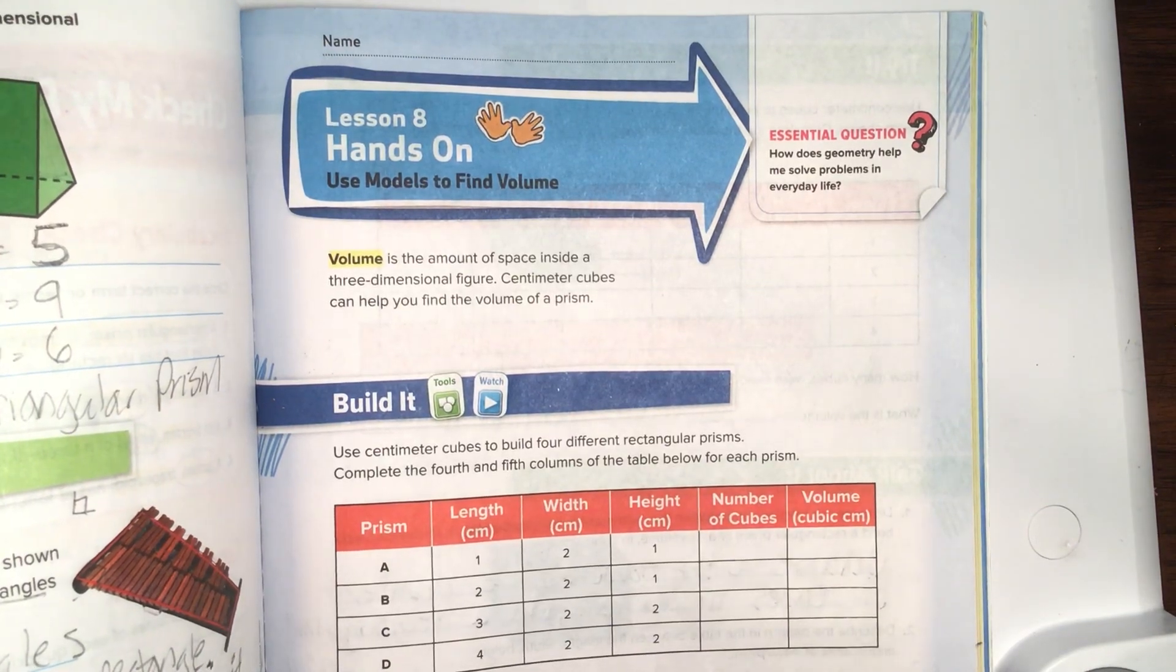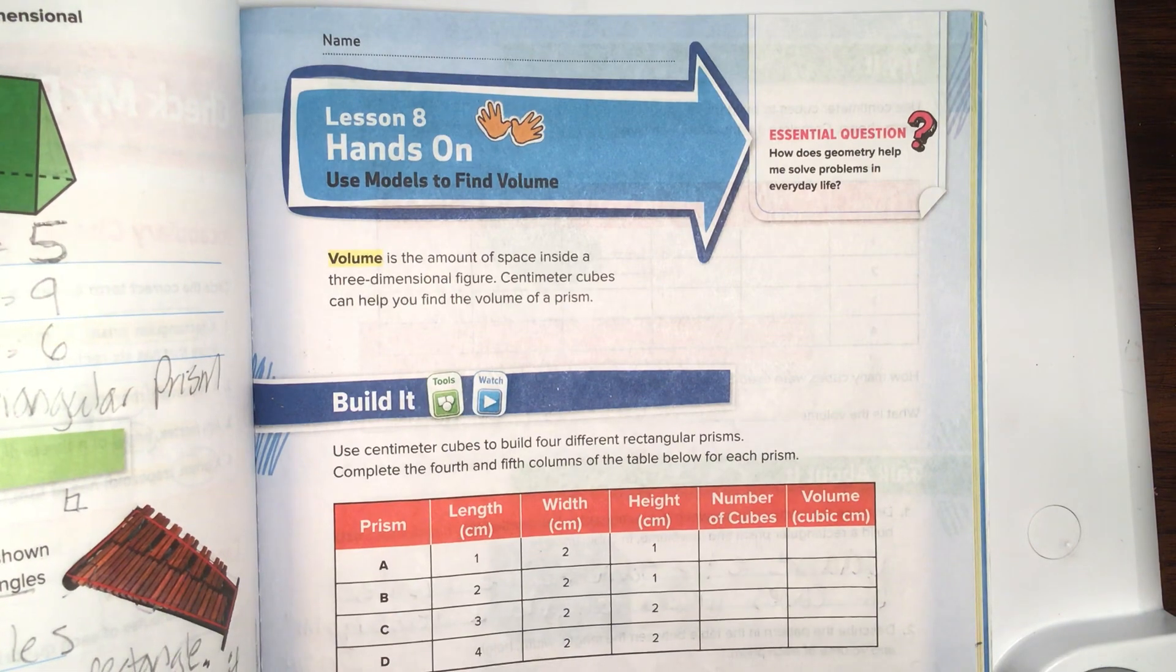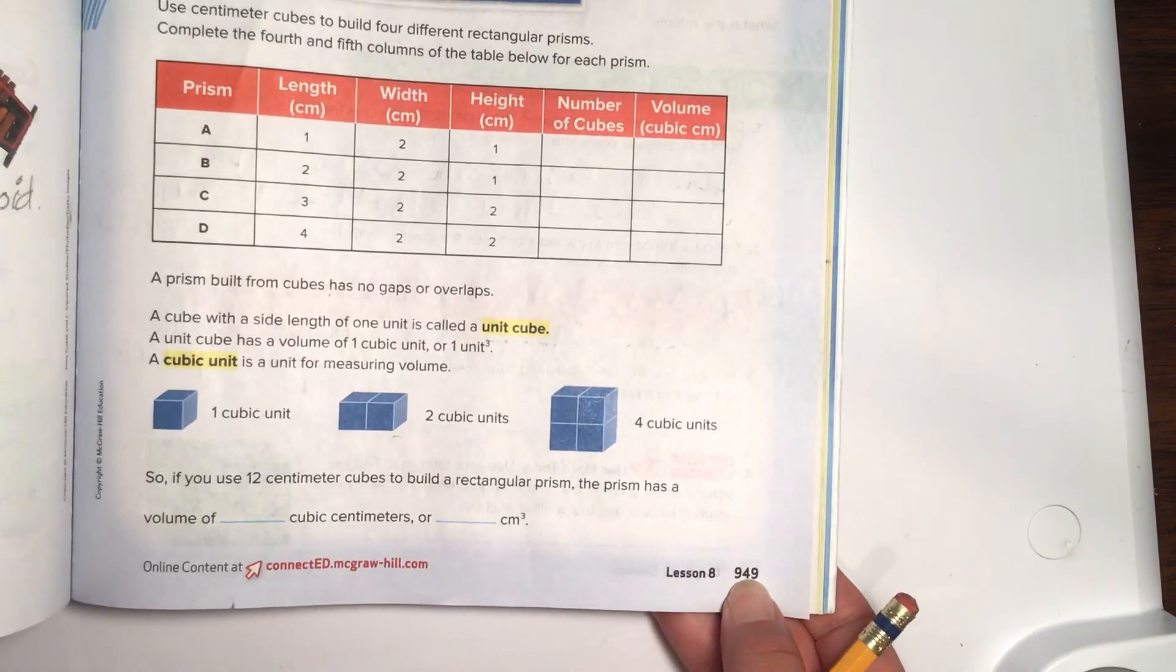Welcome to Math with Mrs. Cox. Today we are going to be discussing Chapter 12, Lesson 8, Hands-On, Use Models to Find Volume. It is located on page 949.